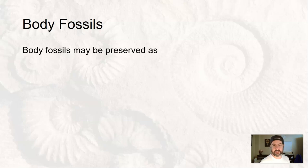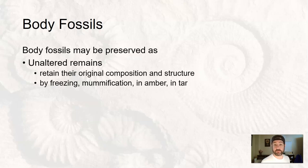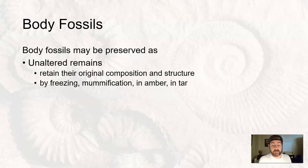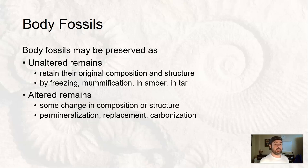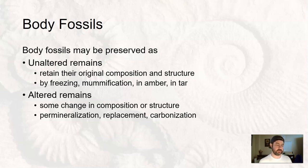There are kind of two categories of body fossils: those that contain unaltered remains — the actual organism itself, the original composition and texture. This can be done by freezing in ice, mummification, or things that are trapped in amber or tar. The other category is altered remains, where there's been a change in composition or structure through permineralization, where minerals have replaced some or all of the organic material, or carbonization, where things decay underground under pressure and turn to a carbon film.